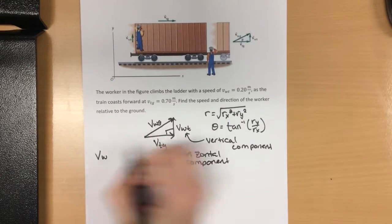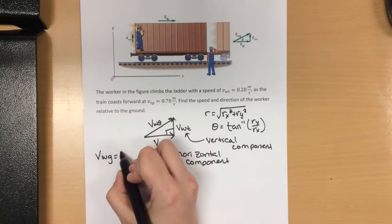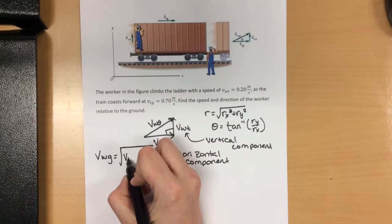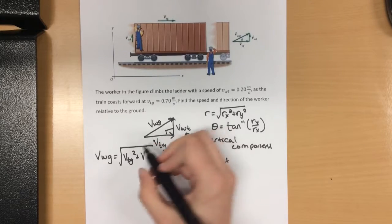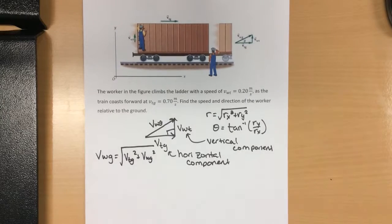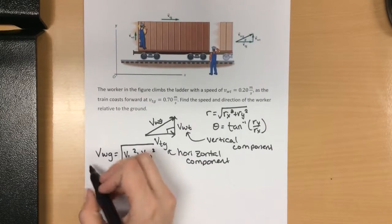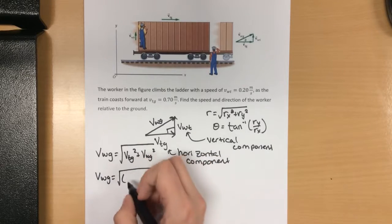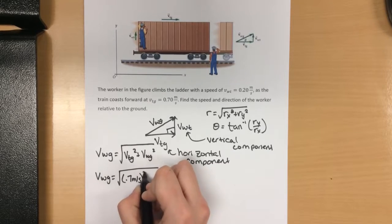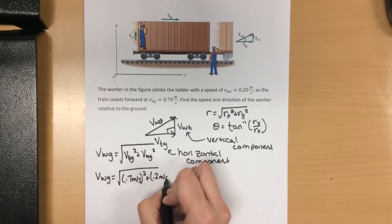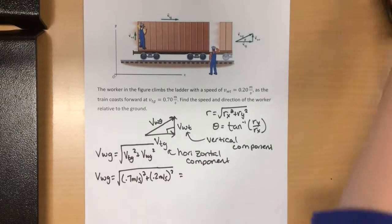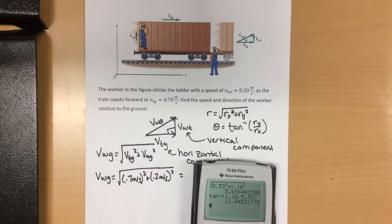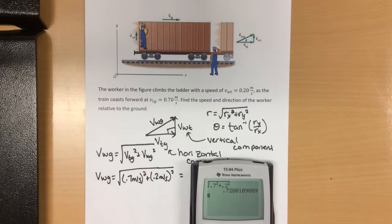As a result, my velocity of the worker to the ground is equal to the square root of the velocity to the train to the ground squared plus the velocity of the worker to the train squared. We can go ahead and plug those in to my formula. Plugging it in, we get a relative speed of 0.73 meters per second.